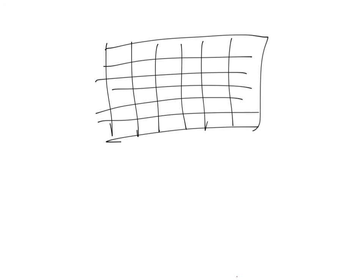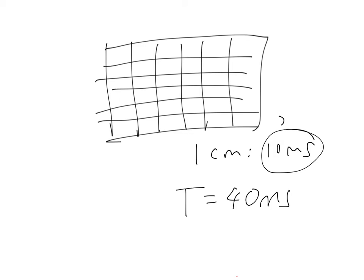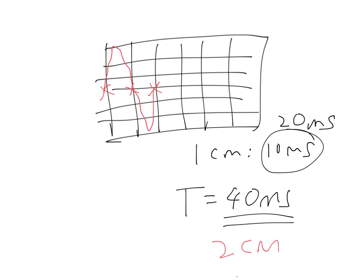Now let's talk about changing the time base setting. We said the period was 40 milliseconds and the scale was 1 cm per 10 milliseconds. If we switch to 1 cm per 20 milliseconds by turning the time base knob, then since the period is 40 milliseconds, we only need 2 cm to represent one period — so the trace will appear more compressed or squeezed together on the screen. Adjusting the time base this way lets you control how spread out or compressed the trace looks.